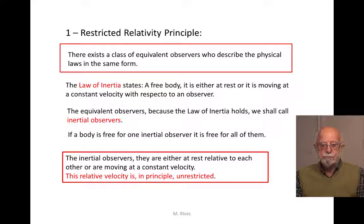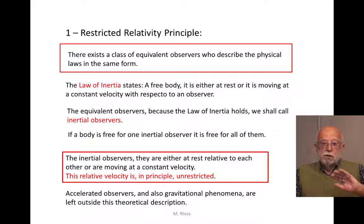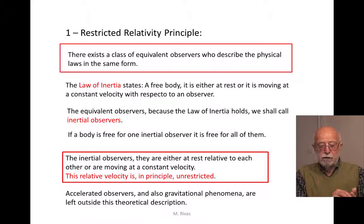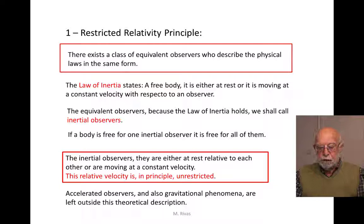If a body is free for one inertial observer, it is free for every other inertial observer. This implies that inertial observers are at rest with respect to each other — perhaps with different orientations of their Cartesian frames — and moving at a constant velocity. This relative velocity, nevertheless, is not unrestricted. In fact, we know that there exists a velocity limit for the motion of inertial observers. An accelerated observer is left outside the class of equivalent observers, because a free body for an accelerated observer is not free for us — we see it moving with some acceleration.